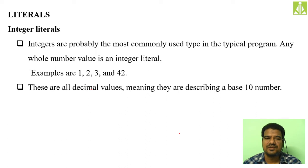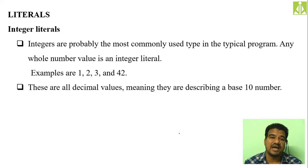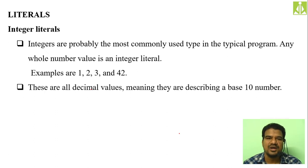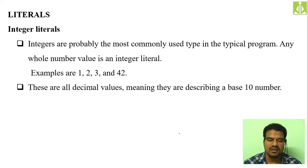Then we have literals. Literals are nothing but constants — values we can't change in our programming. When you say the value 20, it will remain 20 throughout the universe — it is a constant value. Nowhere will 20 become something else; to represent 100 we use 100, not 20. So 20 is a constant value and will remain unchanged. The number of literal types corresponds to the number of data types we have.